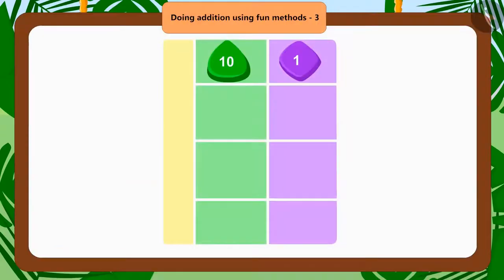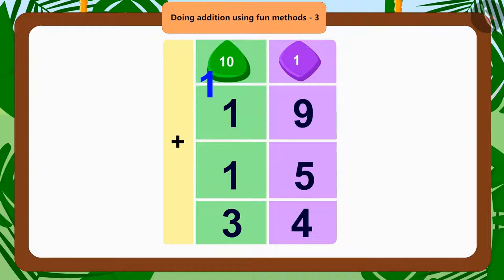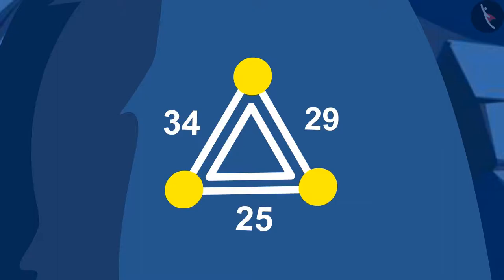Tufan began to find an answer to the puzzle. First, he added 19 and 10. He got 29. Then he added 15 to 19 and got 34.